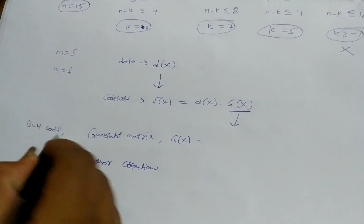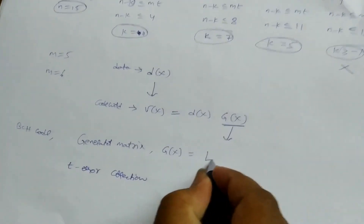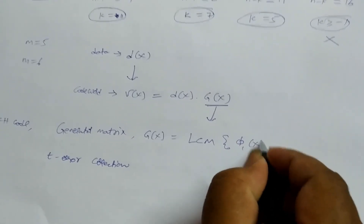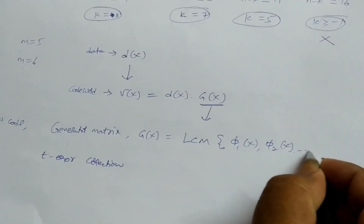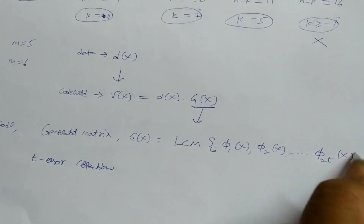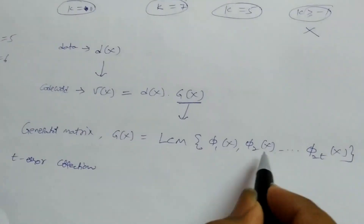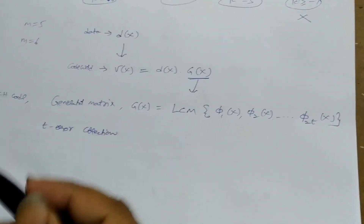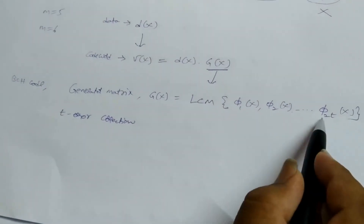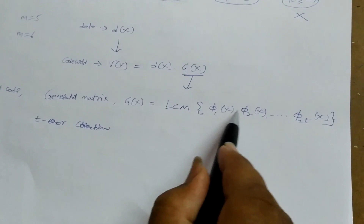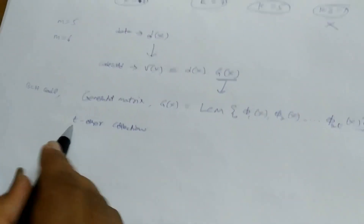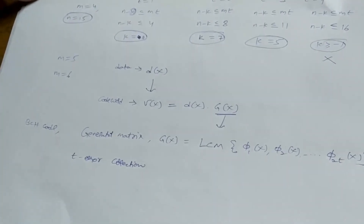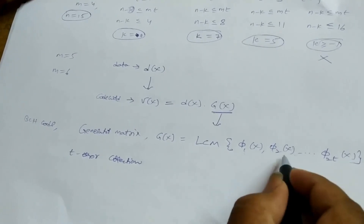The generator polynomial for a BCH code is calculated by the formula: g(x) equals the LCM of phi_1(x), phi_2(x), up to phi_{2t}(x). For single error correction, it is the LCM of phi_1(x) and phi_2(x). For two-error correction, it is the LCM of phi_1(x), phi_2(x), phi_3(x), and phi_4(x), and so on.